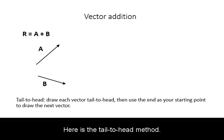Here is the tail-to-head method. Suppose you have two vectors, A and B, represented in this picture.